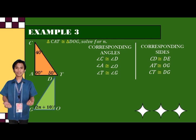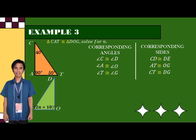If we are going to study these two triangles, angle T is congruent to angle G. And the measure of angle T is 50 degrees, and the measure of angle G is 2N plus 10 degrees.